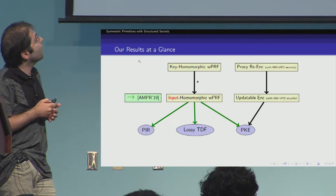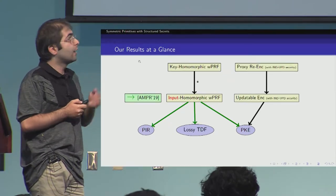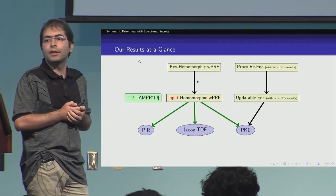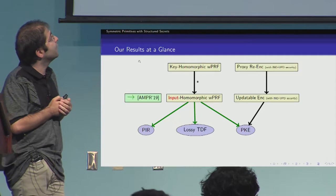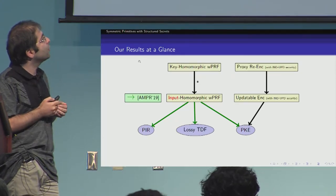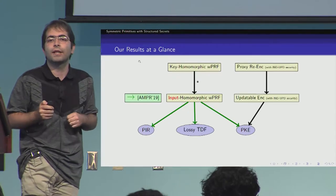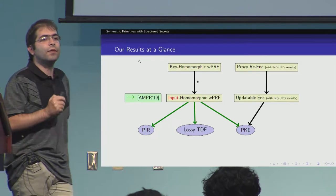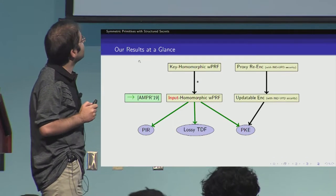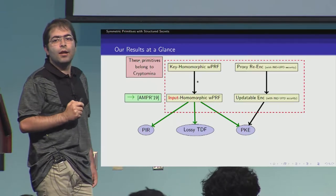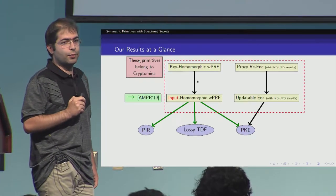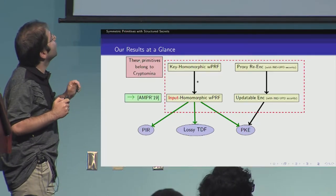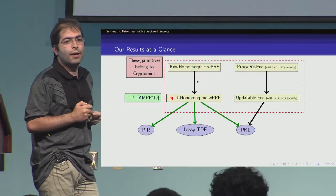In addition, we show that proxy re-encryption with UPDC security implies updatable encryption with UPDC security, which in turn implies public key encryption. More specifically, we show that proxy re-encryption with UPDC security implies updatable encryption with the strong security guarantee known as post-compromised security, and such updatable encryption is sufficient to realize public key encryption. This means these primitives belong to the world of asymmetric primitives. The green arrows are contributions from prior work, and the black arrows are results from our work.